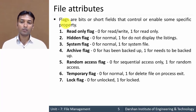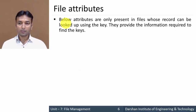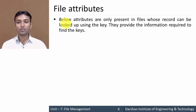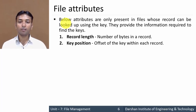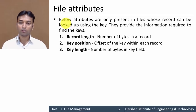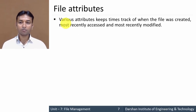The third category of attributes is only present in files whose records can be looked up using a key, and they provide the information required to find a key. The first attribute is record length, which contains the number of bytes in a record. The second is key position, which defines the offset of the key within each record. The third is key length, that is the number of bytes in the key field.